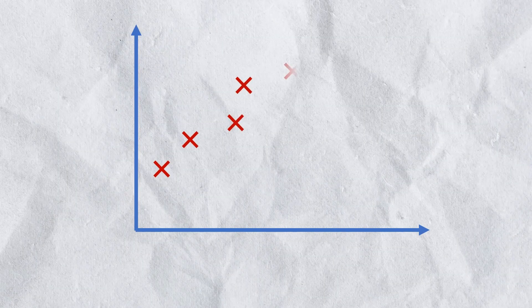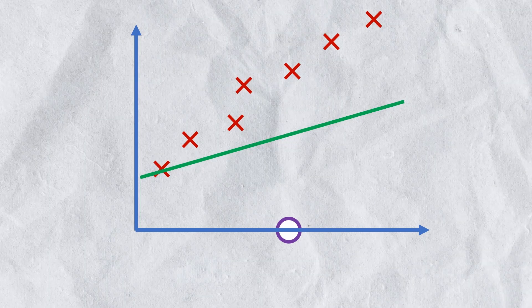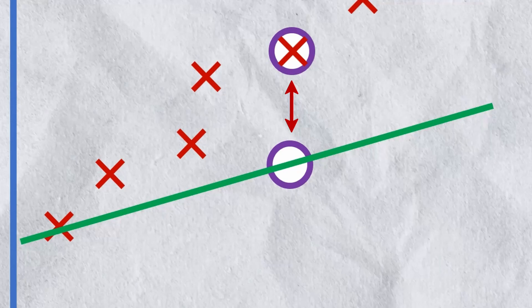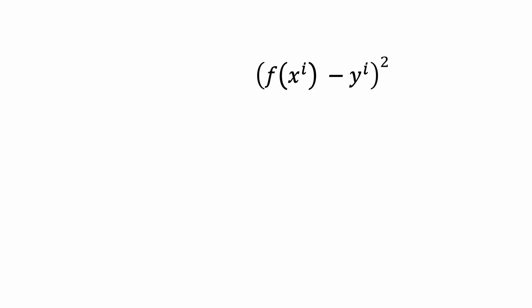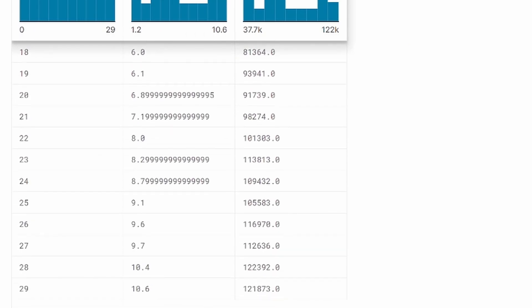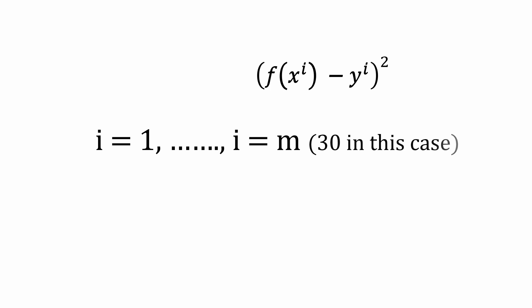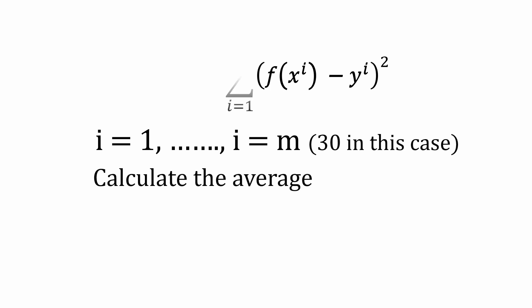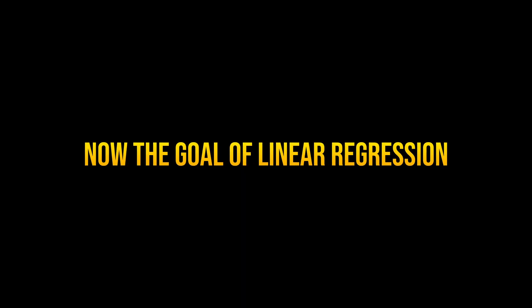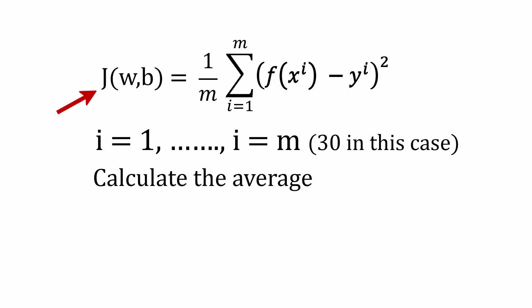Now we have to define the cost function. Let's say I assign a random initial value to w and b — this turns out to give a line like this. For a specified value of x, this would be the value from the function and this would be the actual output. The difference between the predicted and actual point — mathematically that is f(x_i) minus y_i — and I will square this term. We do this for each training example from i=1 to i=m, then find the average by using the summation symbol and dividing by m. This is the cost function. For convenience, we divide by 2m rather than just m. The goal of linear regression is to minimize this cost function, since it is closely related to the difference between predicted and actual output. This is done by the method called gradient descent.